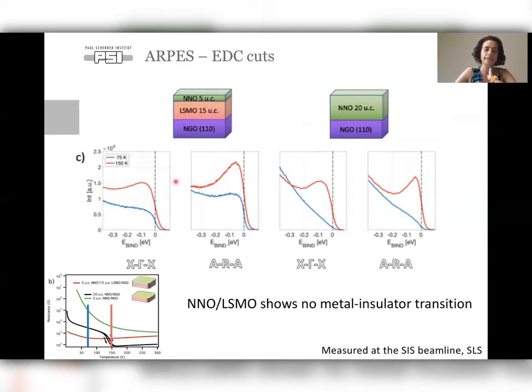Now with the bilayer, we see again, the red curve looks very similar actually to the NNO thick film. But when we lower the temperature, we don't have such a decrease in density of states around the Fermi energy. You have a very clear step function and it's still with a considerable density of states. So what we see here is that the bilayer NNO-LSMO, when NNO is on top of LSMO, it does not show the metal-insulator transition.